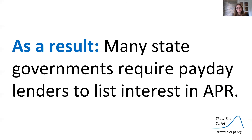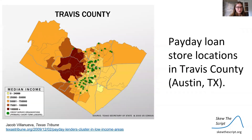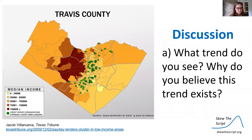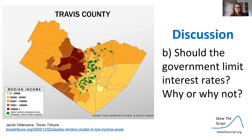And that leads us to our discussion. Here's a map of Travis County, which contains the city of Austin, Texas. You can see the median incomes of various neighborhoods and the locations of payday loan stores marked by green dots. Discussion part A: what trend do you see, and why do you believe this trend exists? Think about what makes payday loans profitable using our previous examples. Discussion part B: should the government limit interest rates? Why or why not? You'll be discussing these in class. And that's all for today — we'll see you next time on Skew the Script.